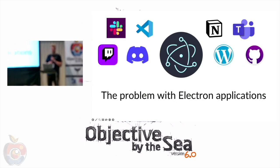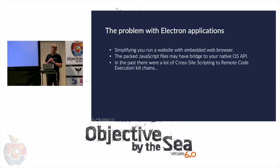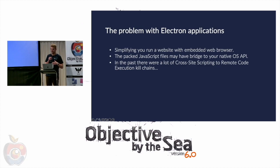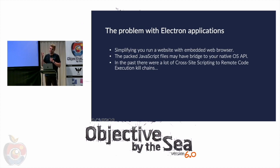Let's talk about the first problem: the problem with Electron applications. If we simplify Electron app architecture, it's an embedded web browser with a website — an HTML file, CSS file, and JavaScript file. Because those JavaScript files run in native applications, they need a bridge to OS APIs, since applications need to create files, move files, open sockets, etc. As we probably all know here, in the past that behavior led to many cross-site scripting vulnerabilities that ultimately led to remote code execution.